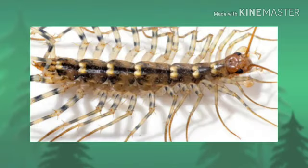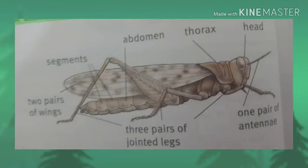Arthropods are invertebrates with jointed legs. Their bodies are divided into segments, and they have a skeleton outside of their bodies. The skeleton is called an exoskeleton.